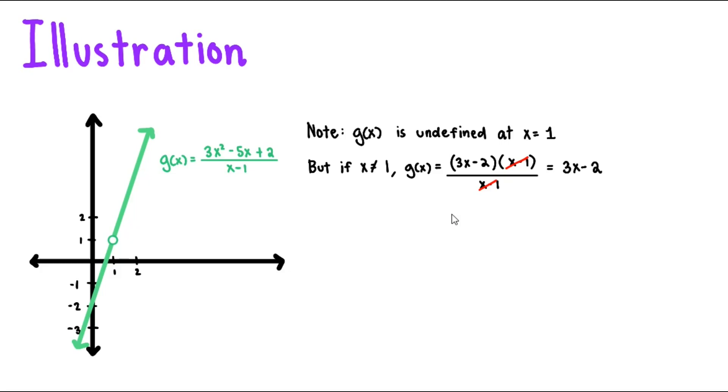And what do you observe? Well, 3x minus 2 is actually our first example. And from above, or from the previous one, we note that the limit of f of x as x approaches 1 is equal to 1.